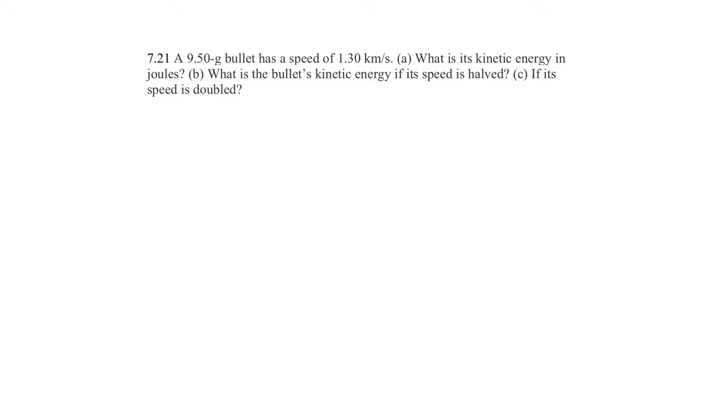A 9.5 gram bullet has a speed of 1.3 kilometers per second. Okay, I already know there's problems here because we want meters per second as velocity, and kilograms has to be our mass. If they're giving us other stuff like that, we have to convert it before the math works.